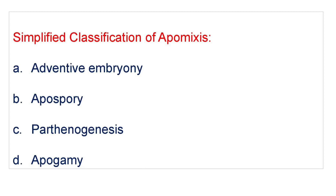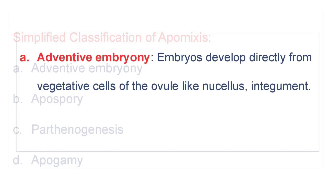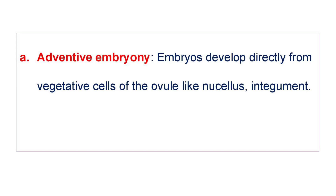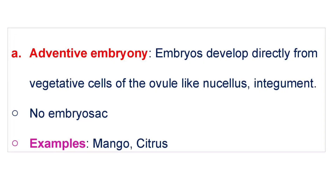A simplified classification of Apomixis includes: Adventive embryony, Apospory, Parthenogenesis, and Apogamy. In adventive embryony, embryos develop directly from vegetative cells of the ovule, like the nucellus and integument. No embryo sac is developed. Examples are Mango and Citrus.